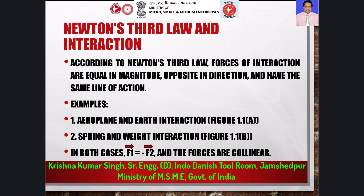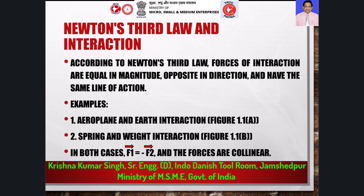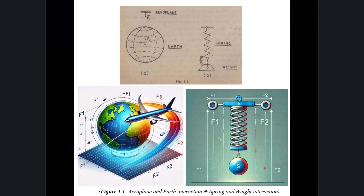Newton's Third Law applies here, stating that for every action, there is an equal and opposite reaction. This means the forces of interaction between two systems are equal in magnitude but opposite in direction, and they share the same line of action. In figure 1.1a, the forces between an airplane and the earth — two systems that are physically separated — still interact through the force of gravity. Similarly, in figure 1.1b, the forces between a spring and a weight in contact represent a mechanical interaction. In both cases, the forces F1 and F2 are collinear and satisfy the condition F1 equals F2.